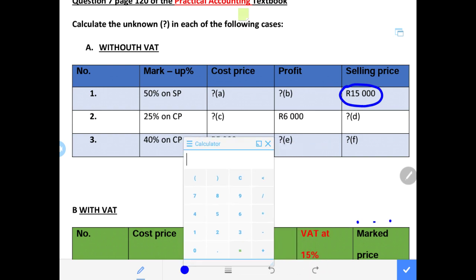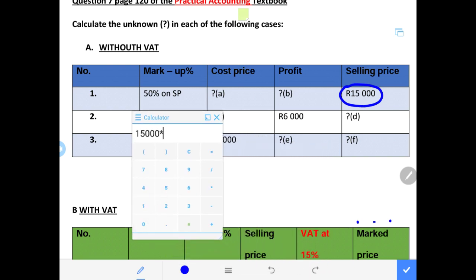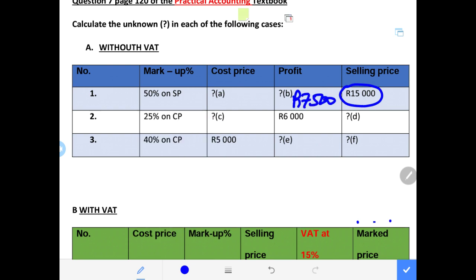We can calculate our profit by saying 15,000 rands times by 0.5, which is 50% — or times by 50 over 100. That gives us 7,500. Now we need to calculate our cost price. We know that when markup percentage is on selling price, cost price is 100% minus markup percentage. In this scenario, the cost price percentage is 50%, and our profit percentage is also 50%.